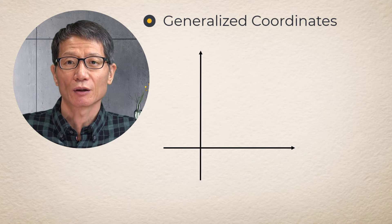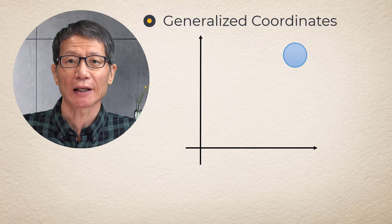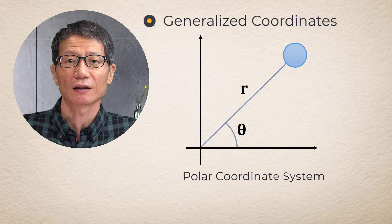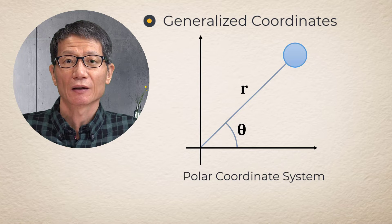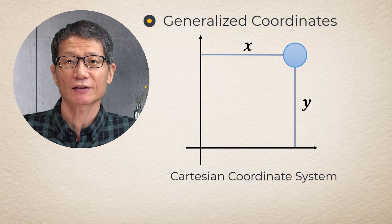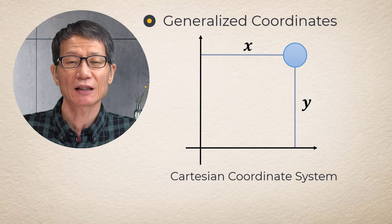Suppose we have a particle in a plane. This particle can be located by r and zeta in the polar coordinate system. The same particle also can be located by x and y coordinates in the Cartesian coordinate system.